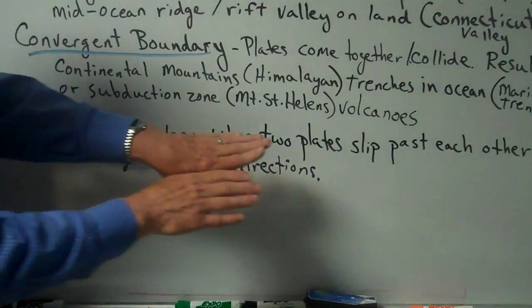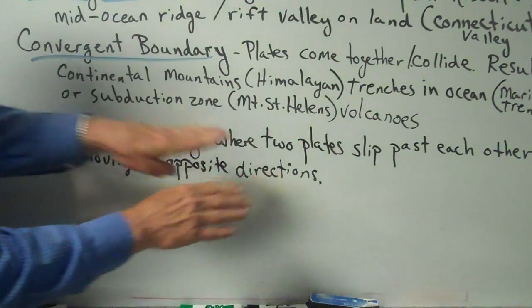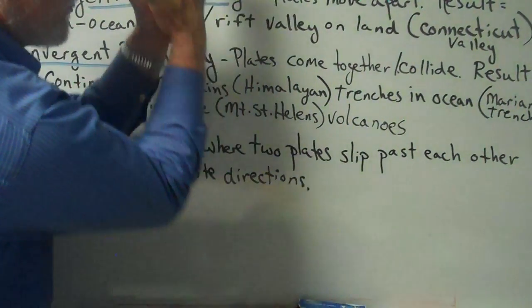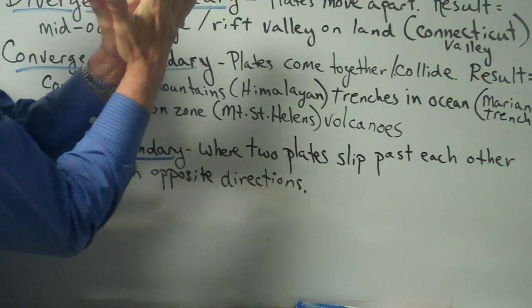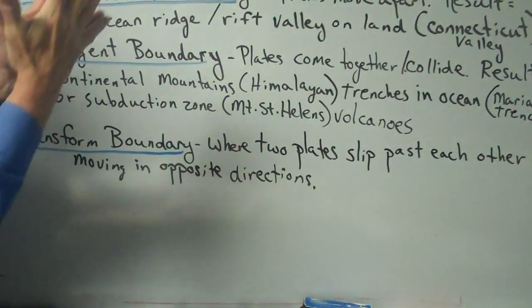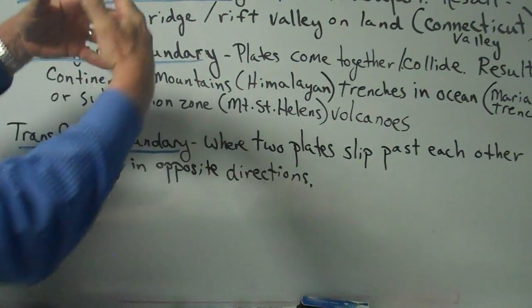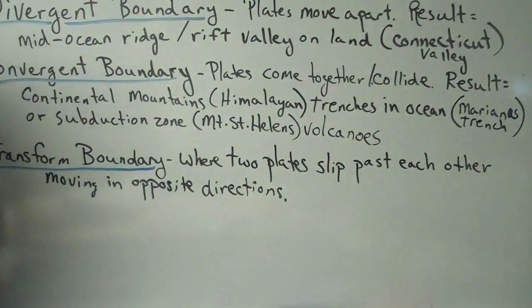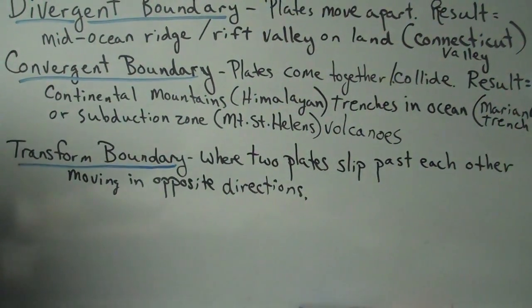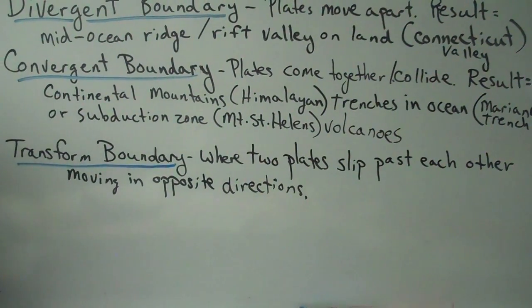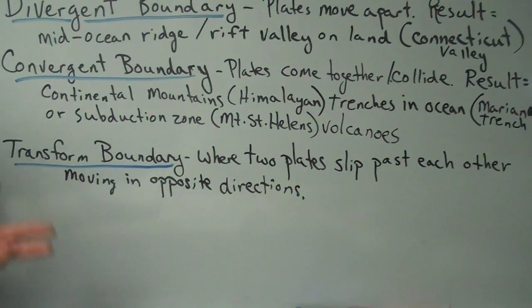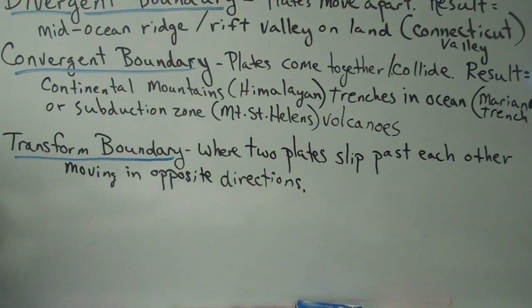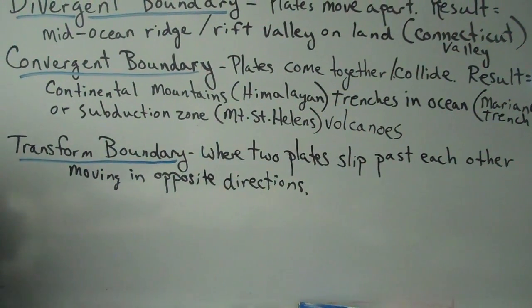So — transform boundary: the plates slip past each other. Convergent boundary: the plates push against each other, squishing and lifting mountains up high. Divergent boundary: the plates are pulling apart from each other. Very destructive, and yet can be very constructive also. The Hawaiian islands are growing in size even as we speak because of the construction from volcanoes.